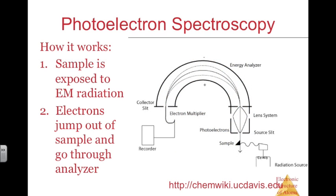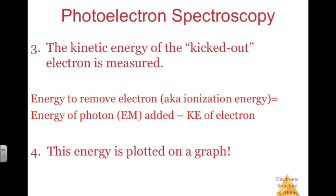To briefly cover how it works: first, a sample is exposed to electromagnetic radiation — typically a specific element in gaseous form. Electrons then jump out of the sample and go through an energy analyzer, going on either the negative or positive side. The kinetic energy of the ejected electron is measured. The energy to remove the electron — the ionization energy — equals the energy added minus the kinetic energy of the electron, and this ionization energy is plotted on a graph.